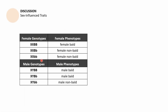Here we have female genotypes and male genotypes — this example is obviously about baldness. Being bald is said to be a dominant trait. As you can see, homozygous uppercase B will make a female bald, whereas heterozygous — if it has a recessive trait — will make the female non-bald. And then the presence of the recessive traits, which is non-bald, will make the female non-bald.